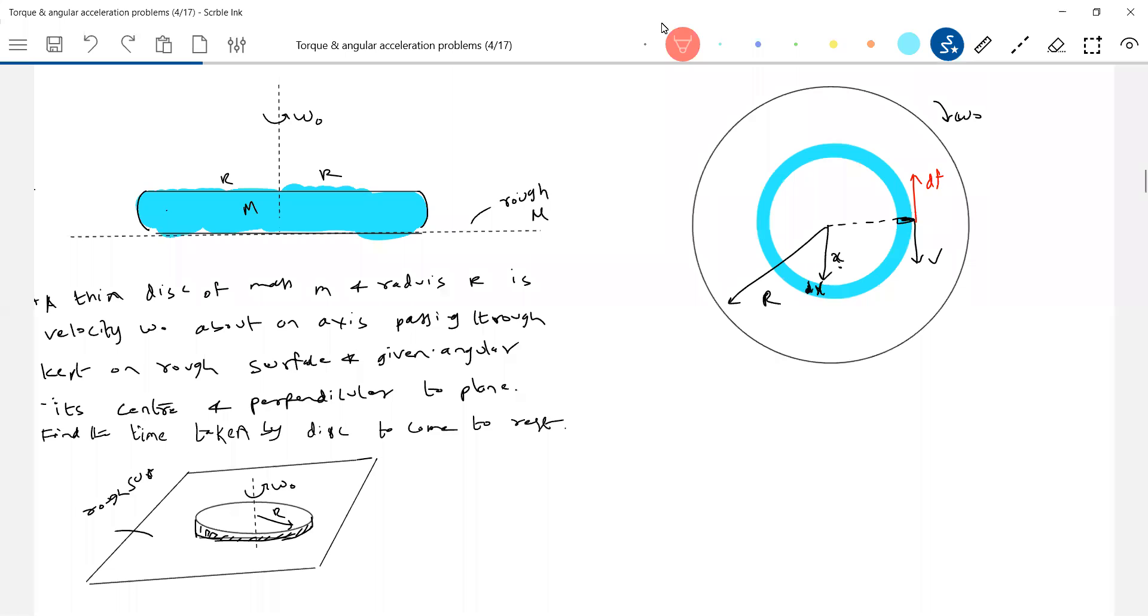The friction acting, the resultant friction acting on this elemental ring, I'm just showing that as df. Not on one element. The elemental ring is what I'm showing. So what is the mass of this elemental ring? dm. I think we can easily calculate now. So we know sigma equals m by pi r squared. So what is the mass of this? dm should be equal to sigma into 2 pi x dx. Area of this strip.